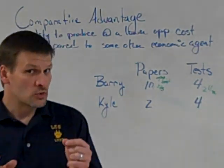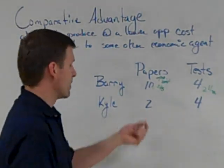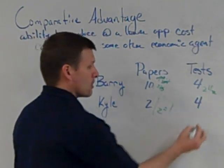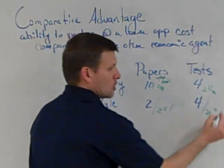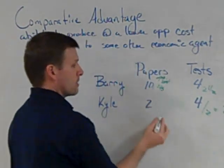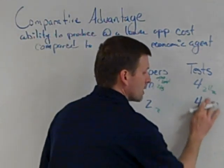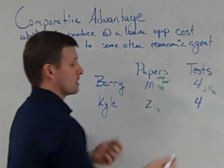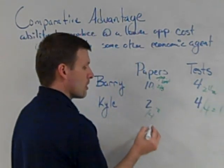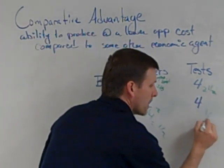Now I have to do the same thing for myself. When I write papers, how many tests do I give up? Like we did with Barry, divide by two: one paper costs two tests. So my opportunity cost when I grade a paper is two tests. Now for my opportunity cost when I write tests: divide by four — one test costs one-half a paper. I'll make a note of that.